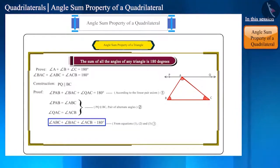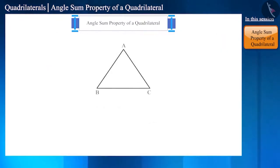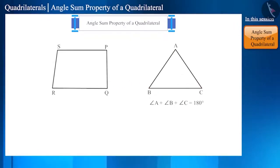Friends, we have studied the angle sum property of a triangle. We know that a triangle has three angles and the sum of the three angles of a triangle is 180 degrees. A quadrilateral has four angles. Can you guess what will be the sum of all the angles of a quadrilateral?